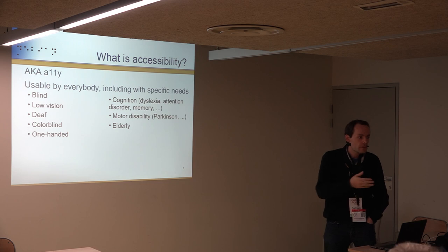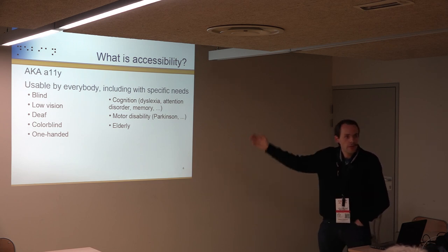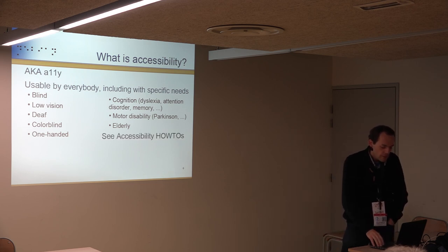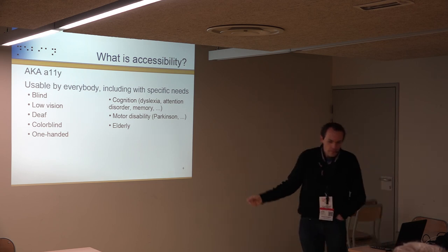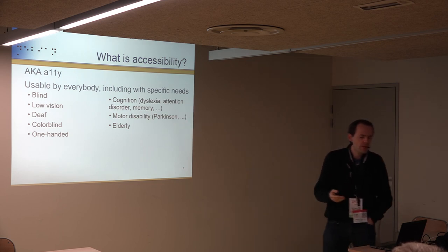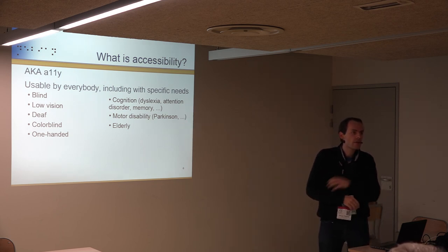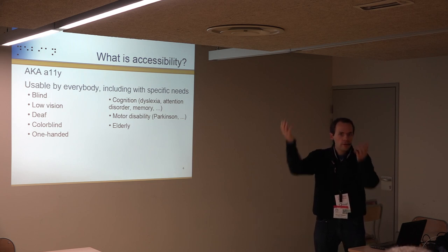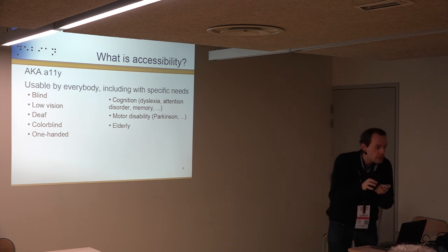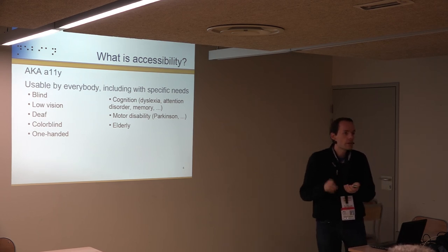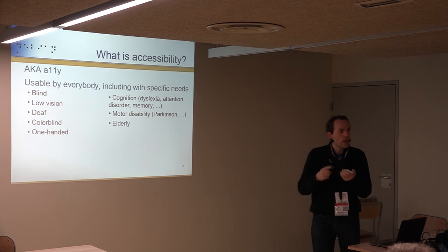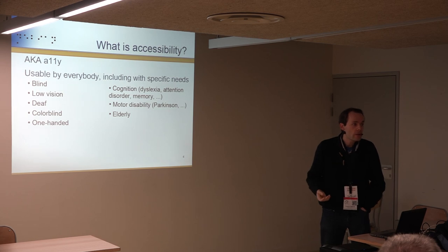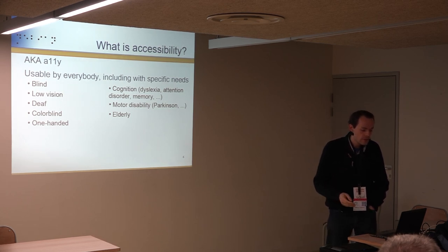Elderly people basically have all of these issues at the same time. All of us will get old at some point, so we will all be concerned eventually. But it might also be you next month, just because you break your arm and have only one hand to type on the keyboard. Or maybe you're in sunlight with your cell phone and cannot see the screen — being able to request high contrast and high luminosity is useful for everybody, because anybody can be in a disability situation.